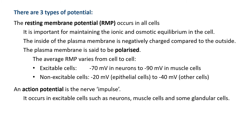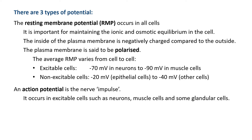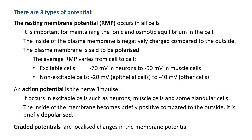An action potential is the nerve impulse — the thing that occurs along the membrane of excitable cells such as neurons, muscle cells, and some glandular cells. In this scenario the inside of the membrane becomes briefly positive compared to the outside — it is briefly depolarized, going over the other side of zero millivolts to plus figures. Graded potentials are localized changes in membrane potential and could involve depolarization or hyperpolarization — you'll understand more about that after neurophysiology.